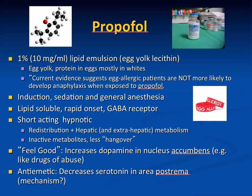Propofol is supplied as a 1% or 10 mg/mL lipid emulsion in egg yolk lecithin. Regarding egg allergy: most of the protein in eggs is in the white, not the yolk. Current evidence suggests that egg allergy does not significantly increase the risk of anaphylaxis with propofol, and in most cases propofol can be used. If concerned, alternatives include etomidate, ketamine, and other drugs for induction of general anesthesia.